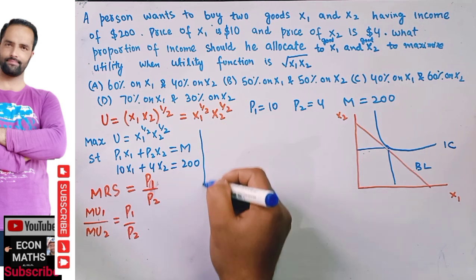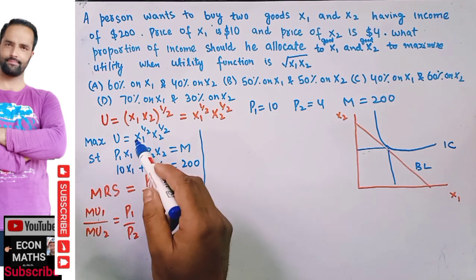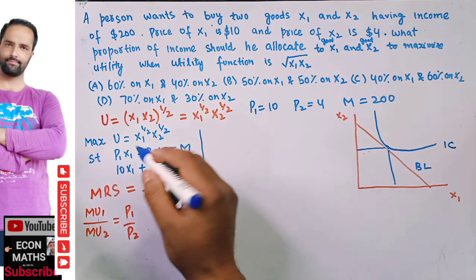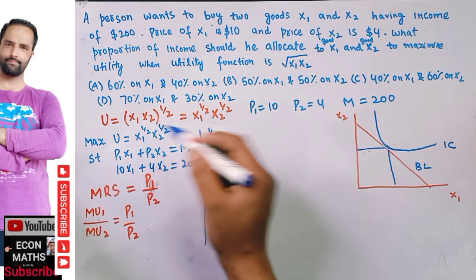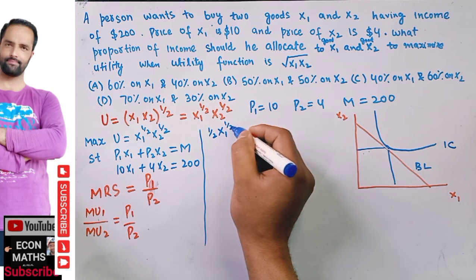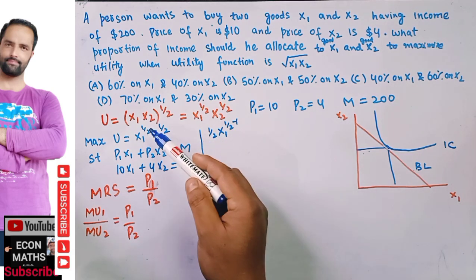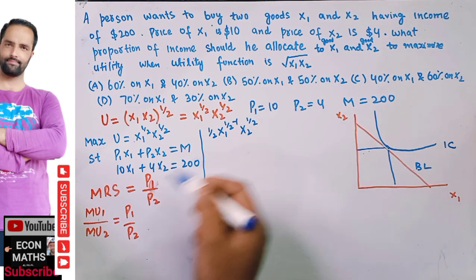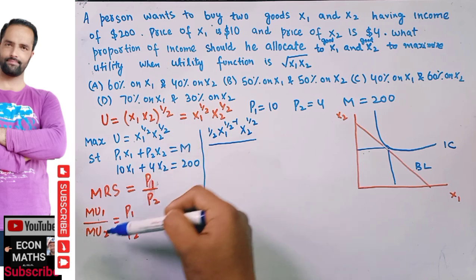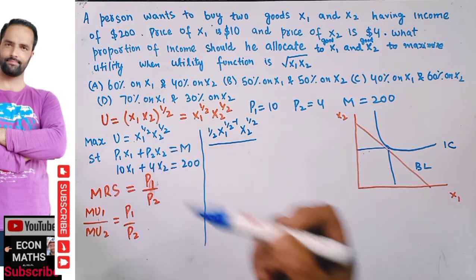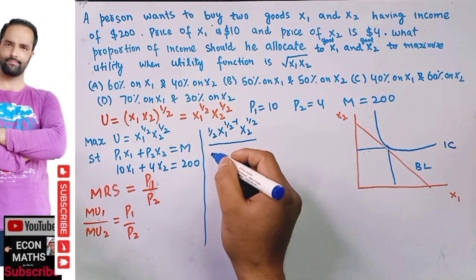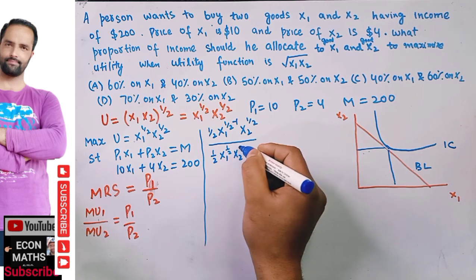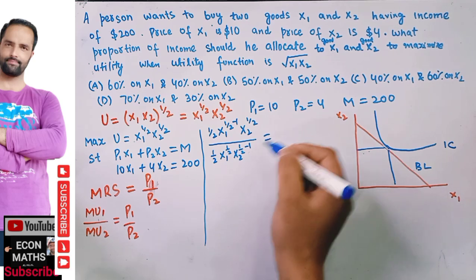The marginal utility of X1 is found by partially differentiating the utility function with respect to X1: MU1 = (1/2)·X1^(-1/2)·X2^(1/2). Similarly, the marginal utility of X2 is found by partially differentiating with respect to X2: MU2 = (1/2)·X1^(1/2)·X2^(-1/2). Setting MU1/MU2 equal to P1/P2 = 10/4.